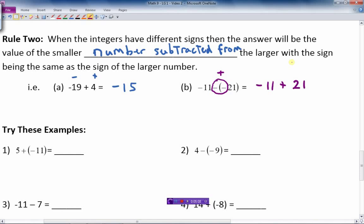So plus 21. There are different signs. One's negative, one's positive. We subtract them. 21 minus 11 gives me 10. And the bigger number is positive. So it's positive 10. I don't need to put a positive there. By not having a sign, we assume that it must be positive.